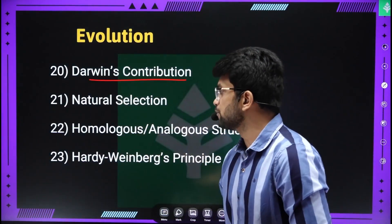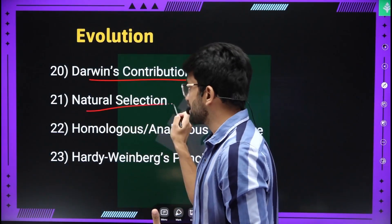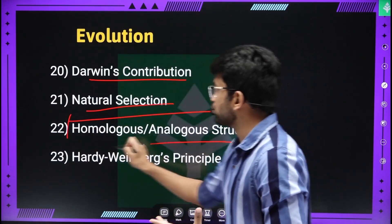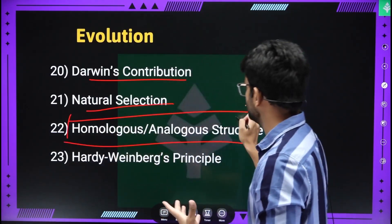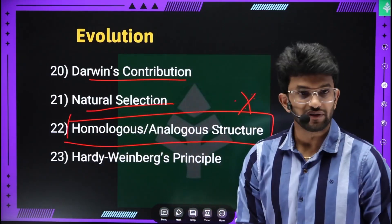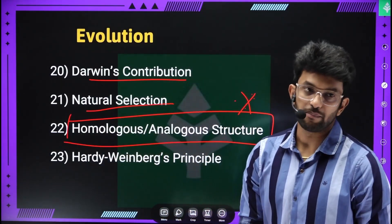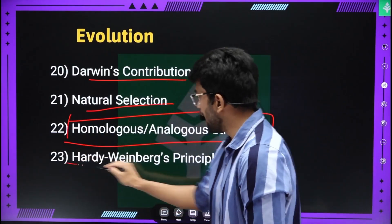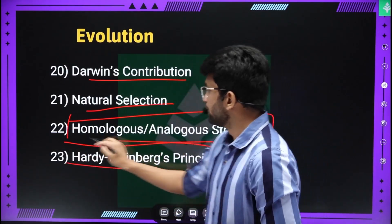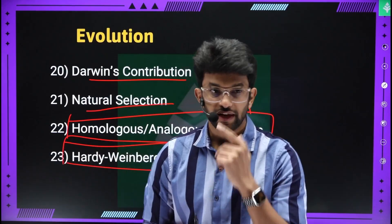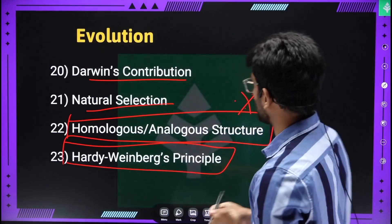Darwin's contribution and natural selection. Homologous and analogous structures — this is important. Hardy-Weinberg principles — very important. Let's move to the next topic.